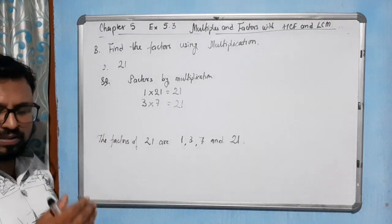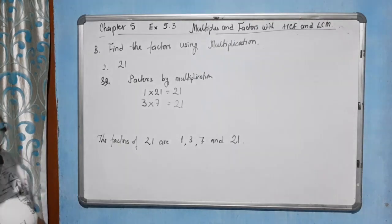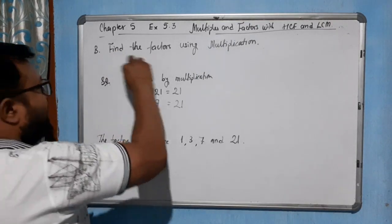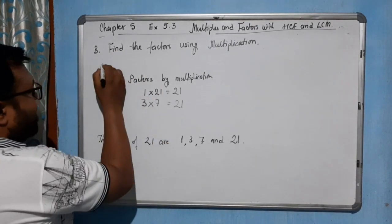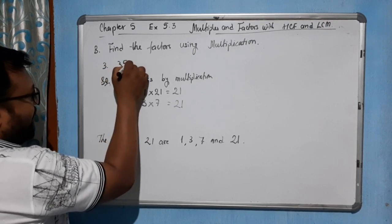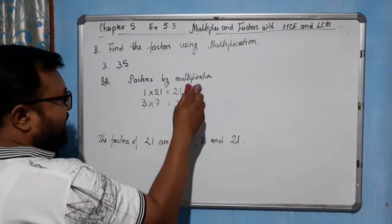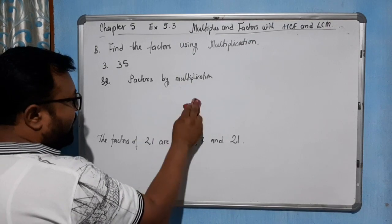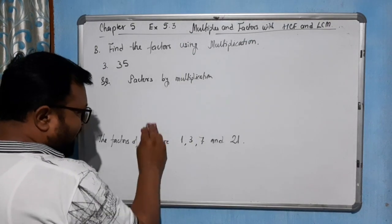Come to the next question. The next question is 35. We will leave the sentence as it is; simply we will rub this multiplication part.